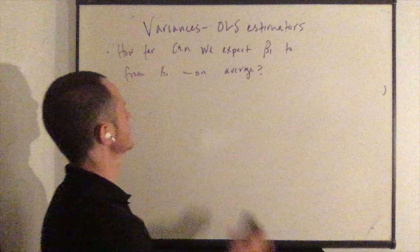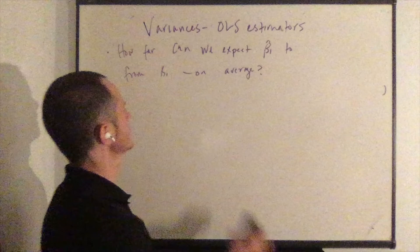Let's illustrate this last point with a plot. If you have two plots — X, Y and X, Y — and plot ten values each, assume that they both represent the same population regression function. Which do you think is going to give a better estimate? It's going to be the one with more spread in X. There is more information on X with which to estimate the population regression function using that sample of data.